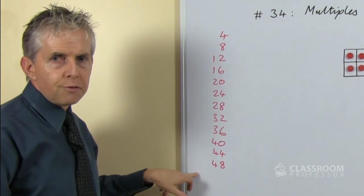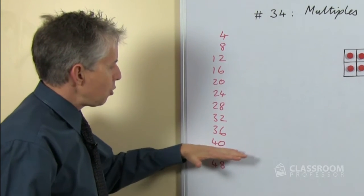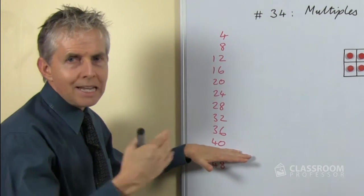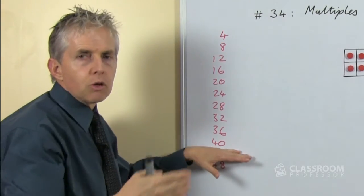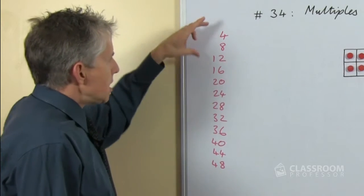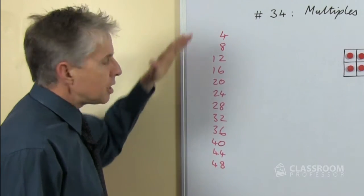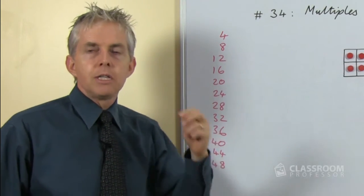Here are the multiples of 4 up to 48. Now if your students are learning up to 10 times number facts then they'll stop at 40, considering the numbers that the students have learned in their number facts.